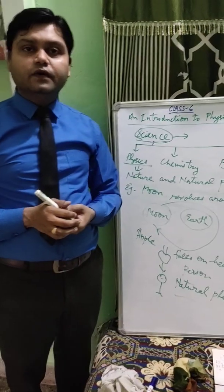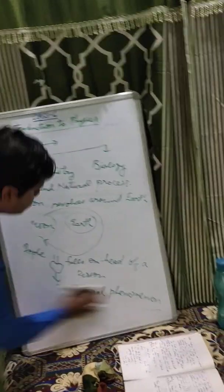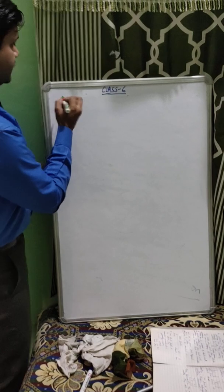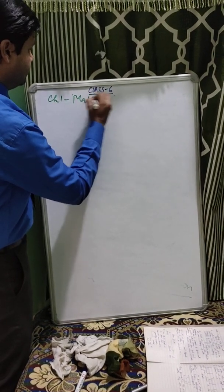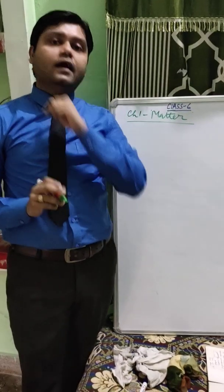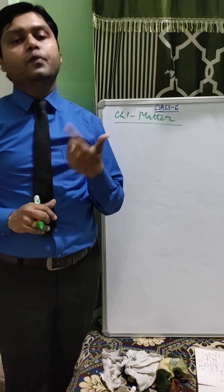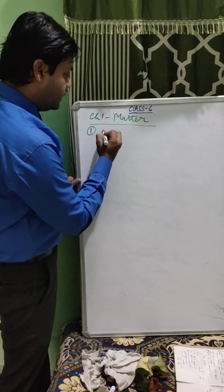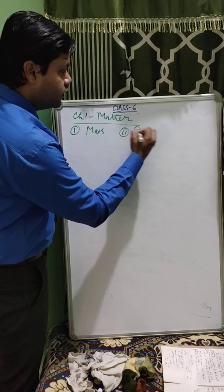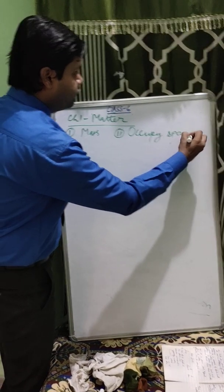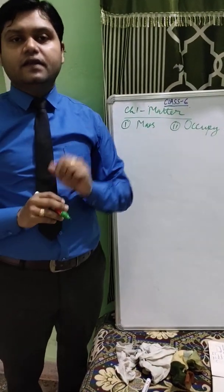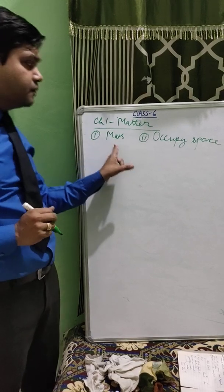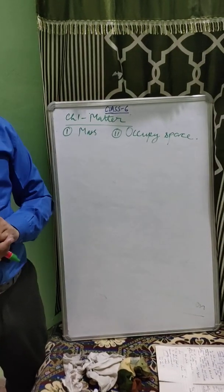Now, let us begin our Chapter 1. What is our Chapter 1? That is Matter. Anything which has mass and occupies space is known as Matter. Two things are necessary for Matter: number one, it should have mass, and number two, it should occupy space. If these two conditions are fulfilled, then anything present in the world will come in the category of Matter.